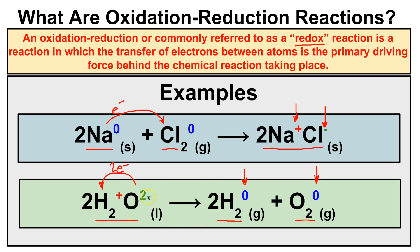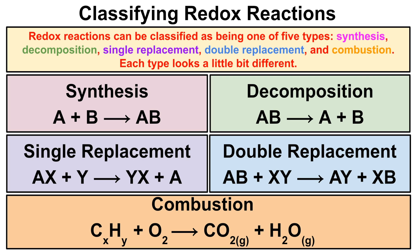This is also called a decomposition reaction. Let's learn how to classify redox reactions. At the end of this video, you will be given your own problem set to try on your own. Redox reactions can be classified as one of five types: synthesis, decomposition, single replacement, double replacement, and combustion. Each one of these five redox reactions is going to look a little bit different.